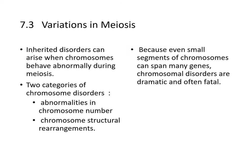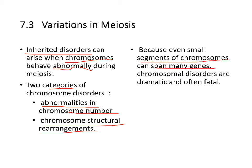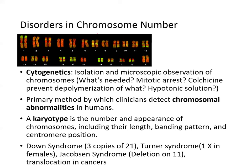Inherited disorders can arise when chromosomes behave abnormally during meiosis. There are two categories of chromosomal disorders: abnormalities in chromosomal number, and structural rearrangements. Cytogenetics — the isolation and microscopic observation of chromosomes — is the primary method by which clinicians detect chromosomal abnormalities in humans.